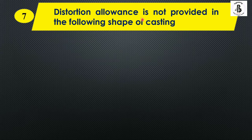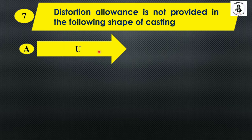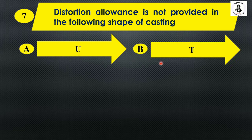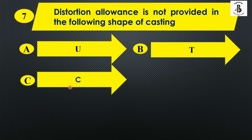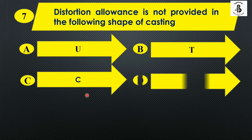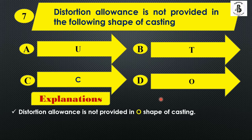Distortion allowance is not provided in the following shape of casting: Option A: U, Option B: T, Option C: C, and Option D: O. Distortion allowance is provided for U shape, T shape, and C shape, but it is not provided for the O shape. So the right answer is Option D.